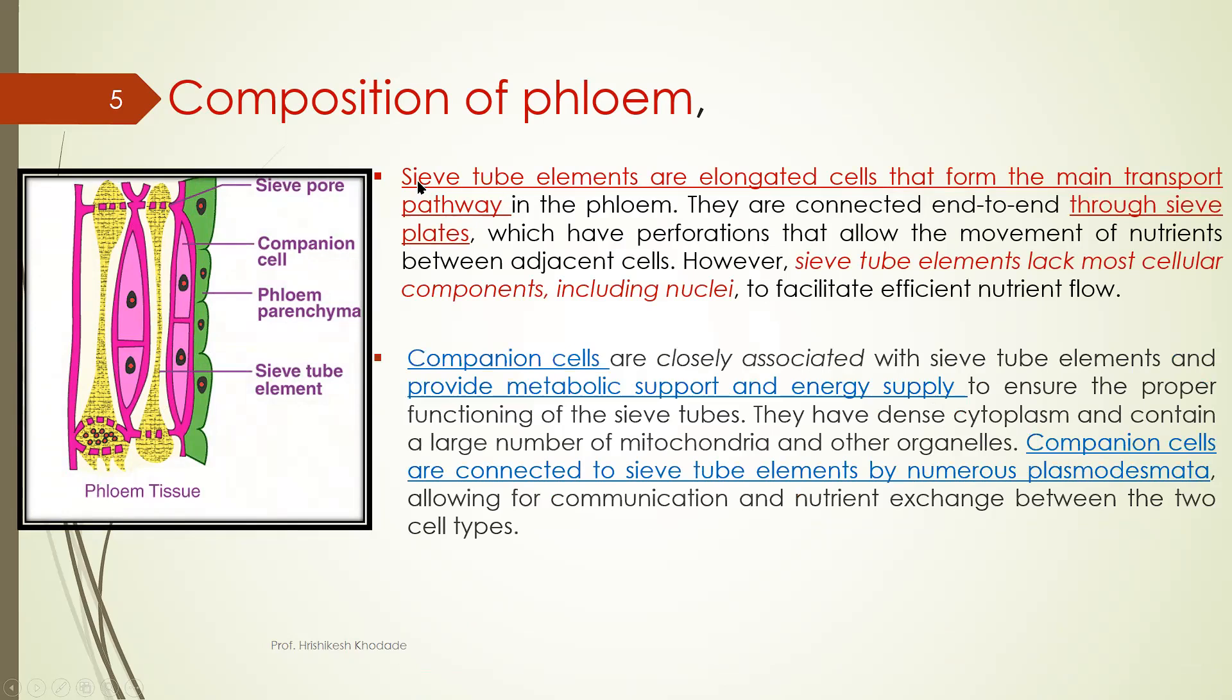I already said that first one is sieve tube element cell. So what do you mean by sieve tube element cell which are elongated cells? You can see they are elongated cells. Here I am talking about this area and are the main transport pathway.